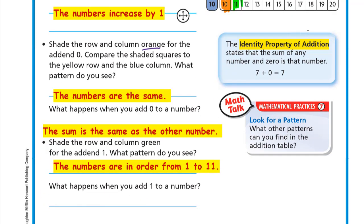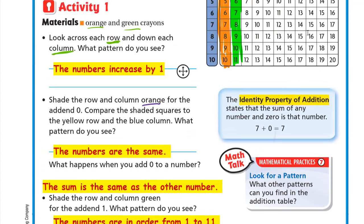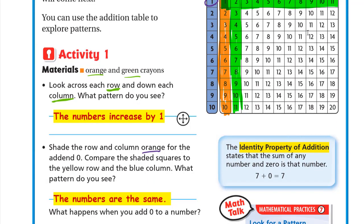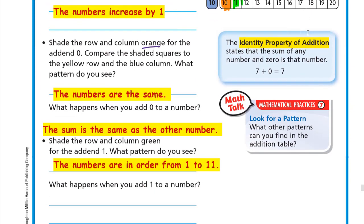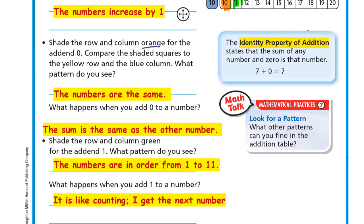What happens when you add one to a number? You get the next number. Adding one to zero gives one; adding one to one gives two; adding one to two gives three — it's like counting. Nine plus one gives ten, the number after nine. So: if we add zero to any number we get that number, and if we add one to a number we get the next number.